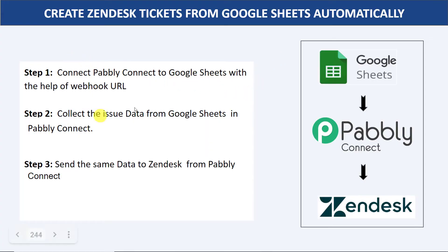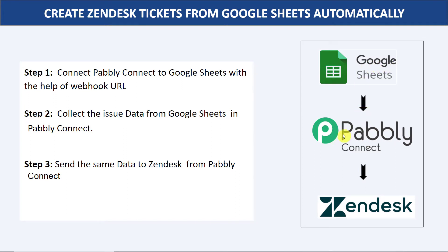These are the steps we have to follow. In step one, we integrate Pabbly Connect and Google Sheets using a webhook URL — you simply copy it from Pabbly Connect and paste it into Google Sheets. In step two, enter data in Google Sheets and ensure it's collected in Pabbly Connect. In step three, using that same data, we create a ticket in Zendesk.